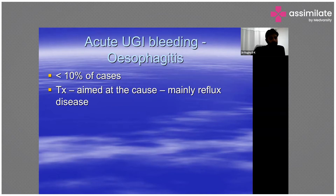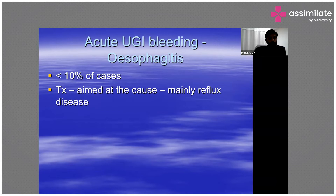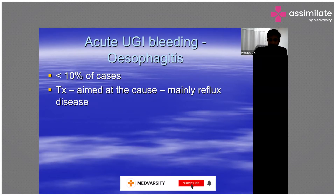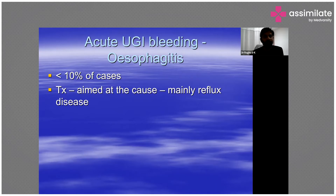Coming to the specific etiologies in upper GI bleeding: esophagitis accounts for about 10 percent of cases. Patients usually present with coffee-ground emesis — elderly patients, bed-bound patients, nursing home patients, renal failure patients, chronic reflux patients, or gastroparesis patients.